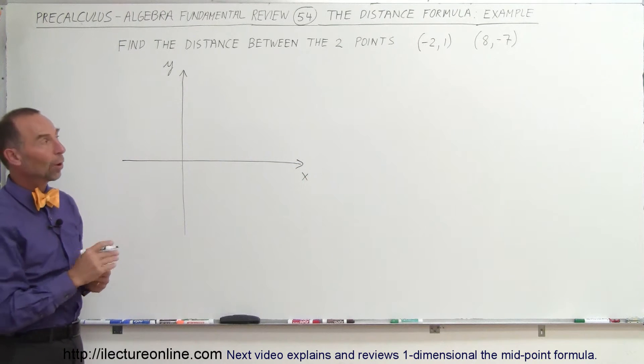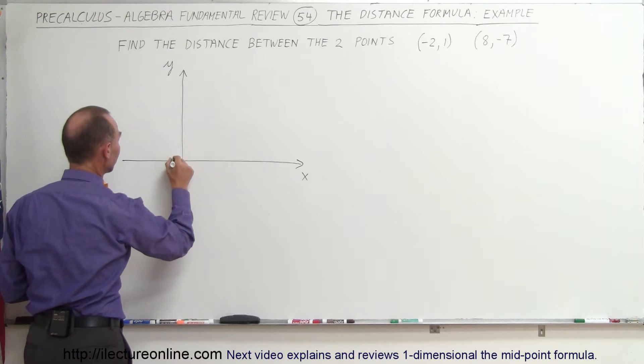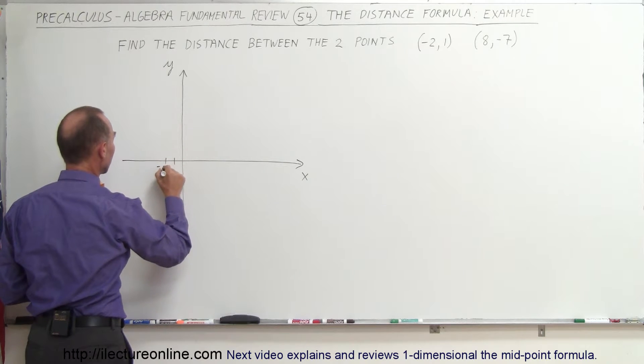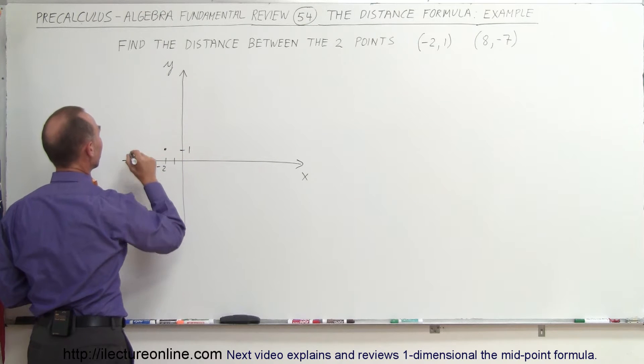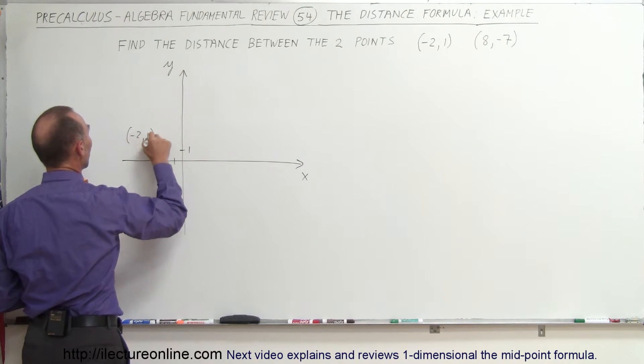We're finding the point negative 2, 1. So the x-coordinate is negative 2, negative 1, negative 2, and positive 1. So that would be positive 1, that would be the point right there. And so that's the point negative 2, 1.